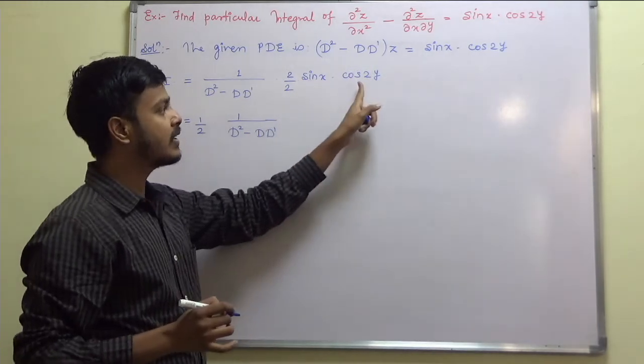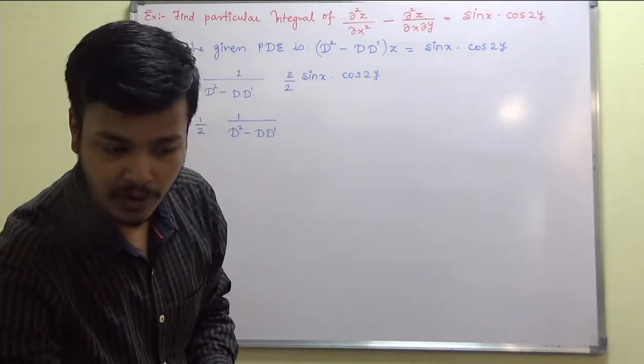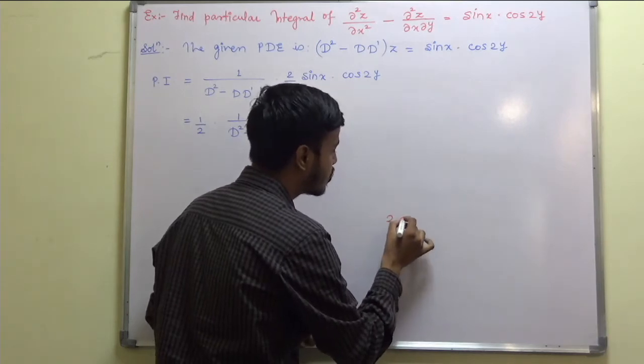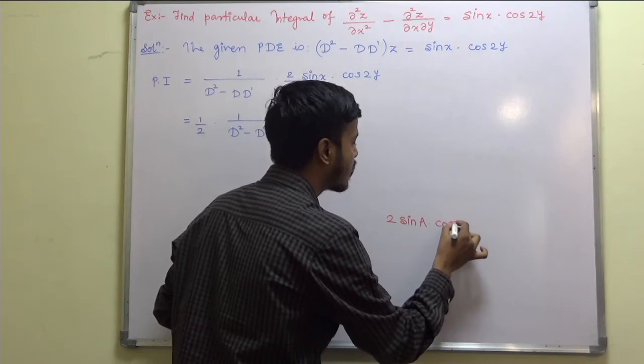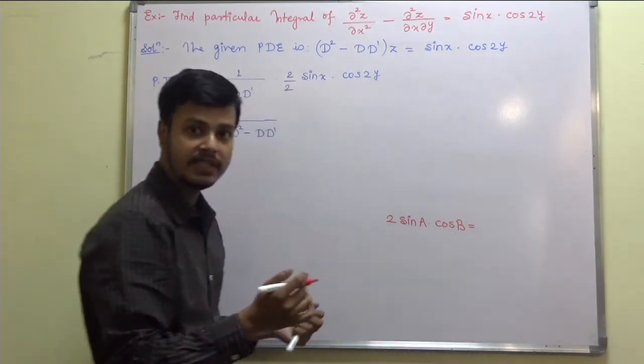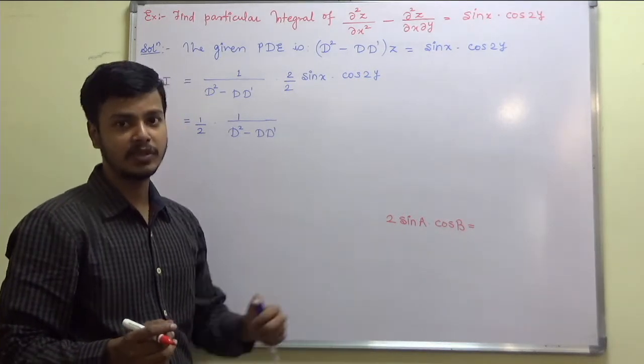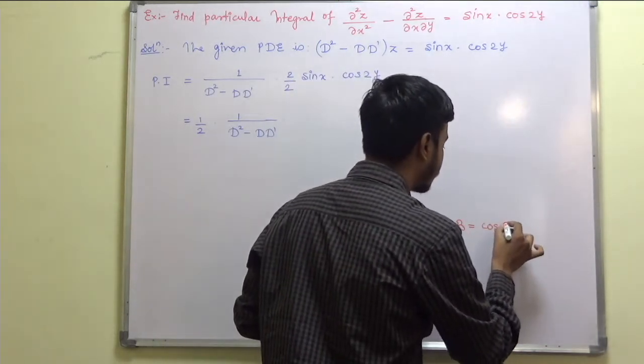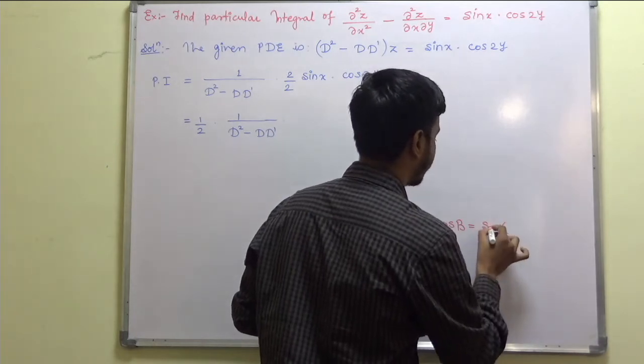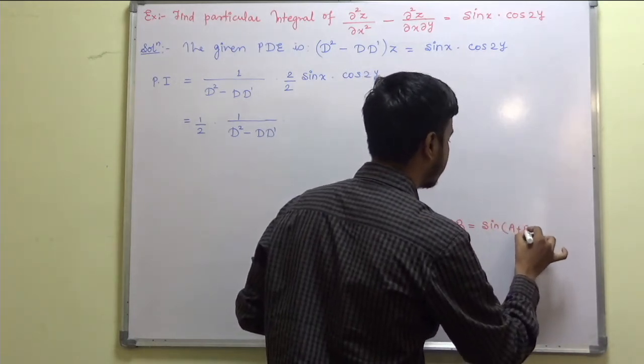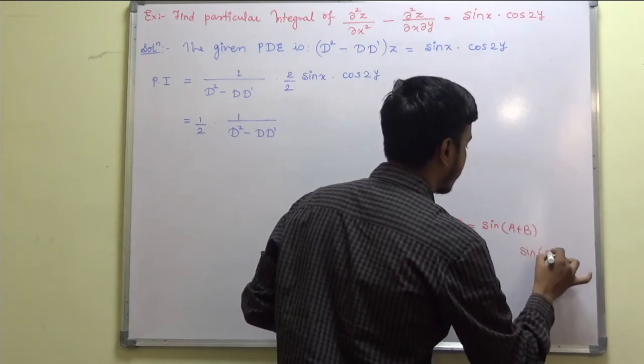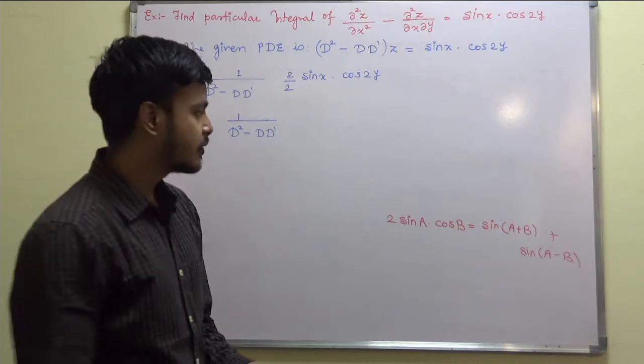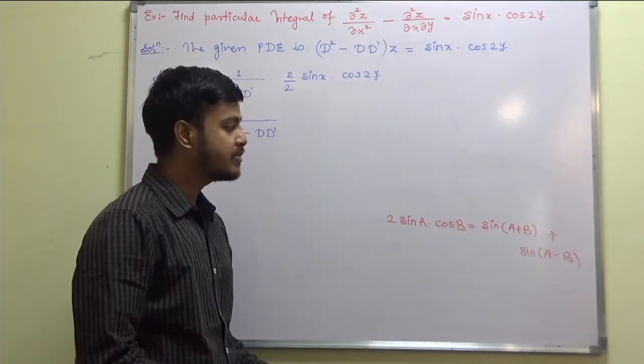Now this is like 2 sine A cos B. So do you remember the formula for 2 sine A cos B? Let me remind you of that formula. Here I am writing 2 sine A into cos B. If you remember the formula, just pause the video for a few seconds, try to write down the formula for this and resume the video. So I hope you might have written it. 2 sine A cos B is sine of A plus B plus sine of A minus B, because sine is appear plus, so it is plus, sine would be plus.